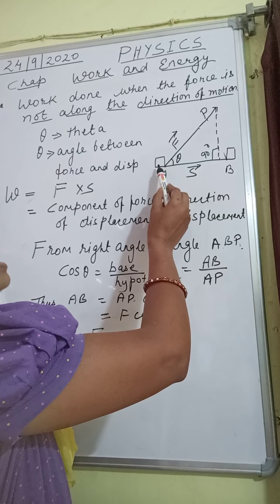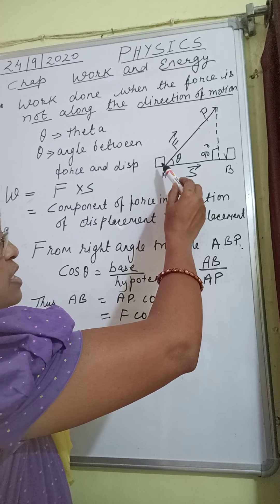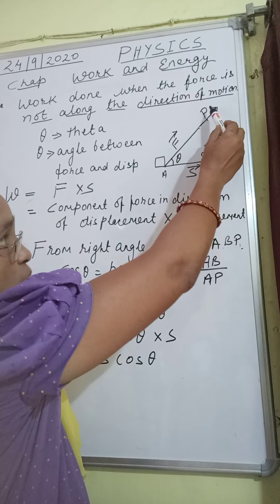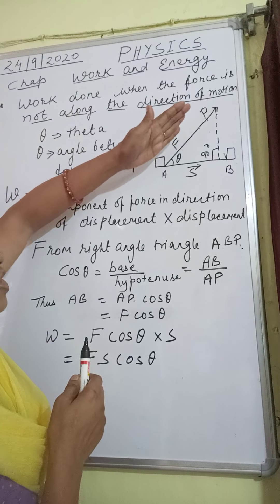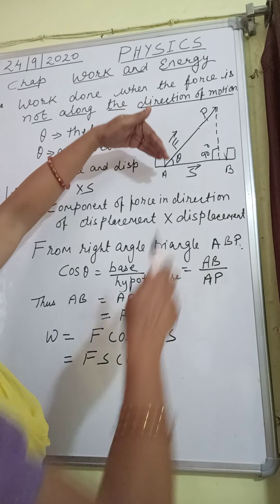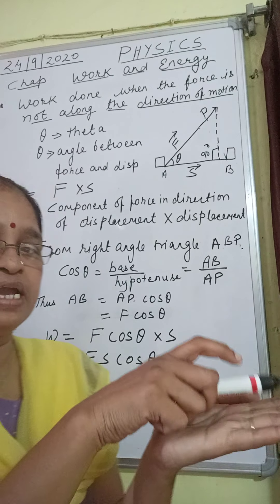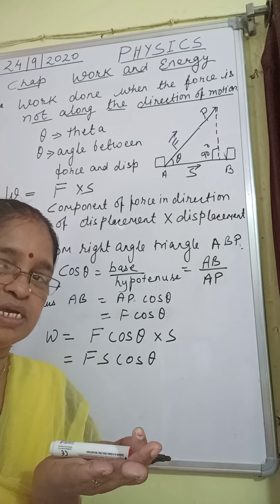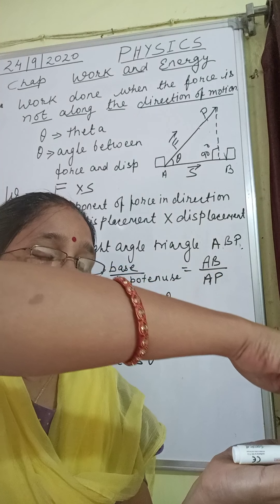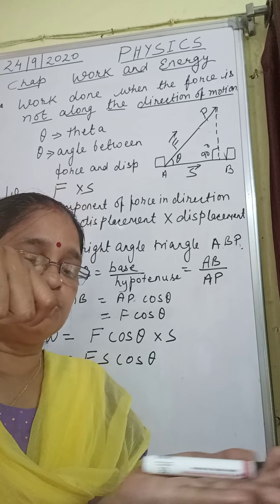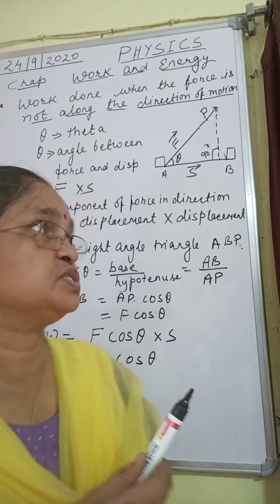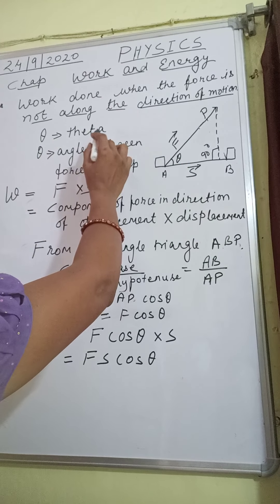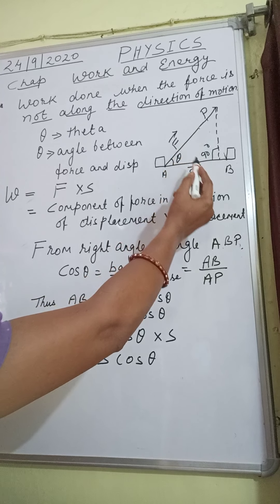Take a toy car. Tie a thread to the toy car and pull the thread in a direction as shown — along AP. You are applying force in that direction, but the toy car is moving in a different direction. So here you can see that the force applied and the motion of the body are not in the same direction. We will call theta — T-H-E-T-A — the angle between force and displacement.